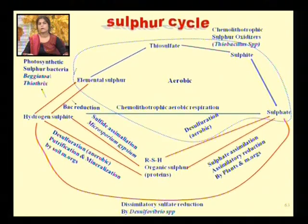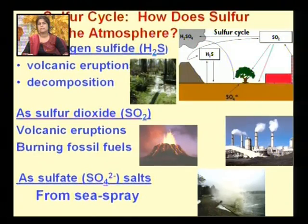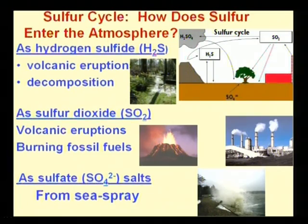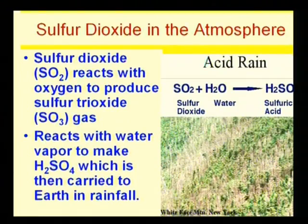Chemolithotrophic organisms commonly convert hydrogen sulfide to sulfate. Sulfur enters the atmosphere in the form of hydrogen sulfide during volcanic eruptions and decomposition, as sulfur dioxide during volcanic eruptions and fossil fuel burning, and as sulfate from sea sprays.